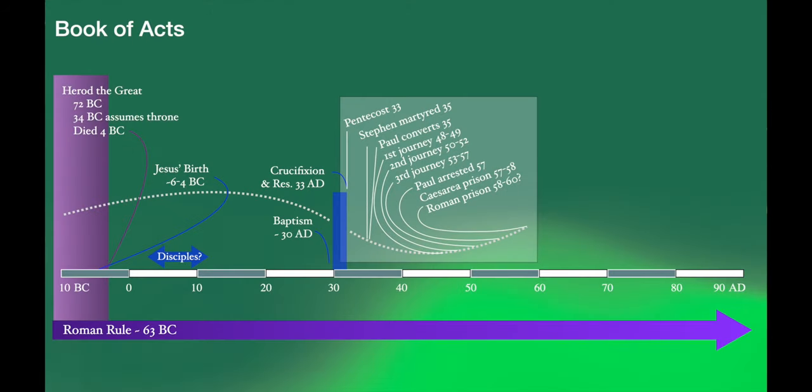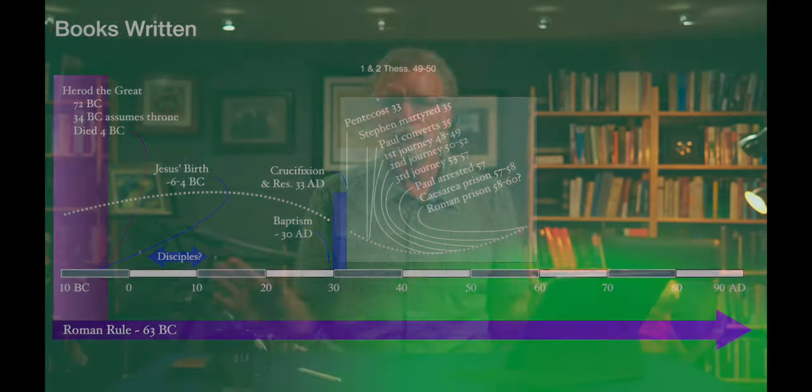Let's add another layer of information over our timeline. 1st and 2nd Thessalonians are widely agreed to be the first letters Paul wrote. One thing to realize is that the New Testament is not organized chronologically — the books are grouped thematically. The Gospels come first, then Acts makes a nice transition to the letters, then Paul's letters organized roughly longest to shortest, then the Catholic or universal letters — Hebrews, James, Jude, John's letters — and the New Testament closes with the grand finale of the Book of Revelation.